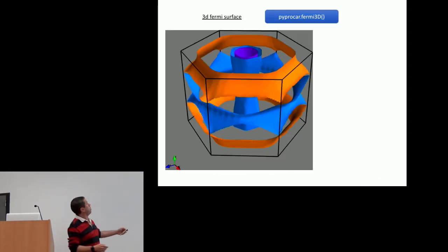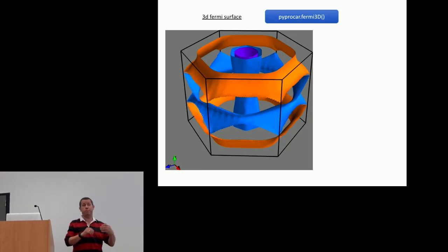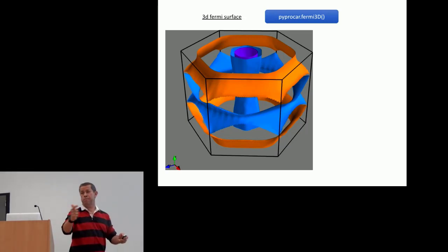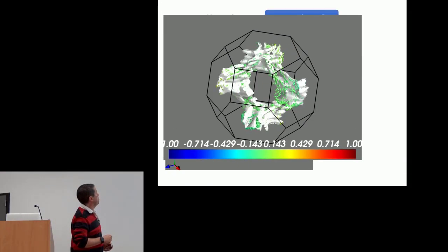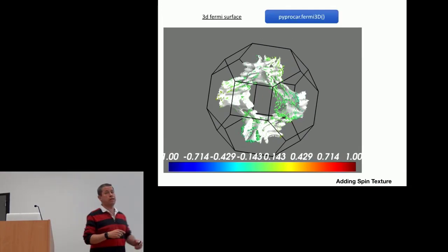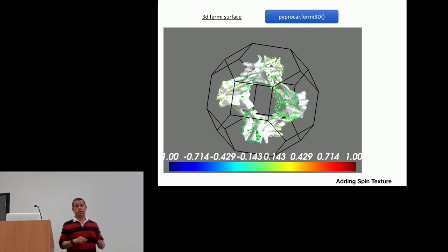We can also do the three-dimensional Fermi surface. You can color the Fermi surface by atom, spin projection, or orbital. For example, this is the case of bismuth telluride, which is a topological insulator. Here is the Fermi surface with two electron pockets on top of the Fermi level, and the arrows correspond to the spin orientation perpendicular to the Fermi surface. Everything comes from PyProcar.